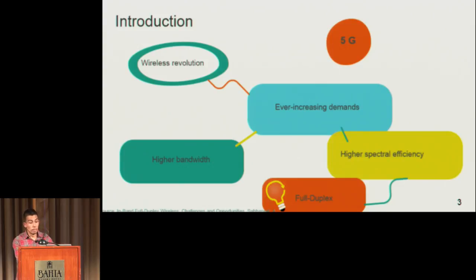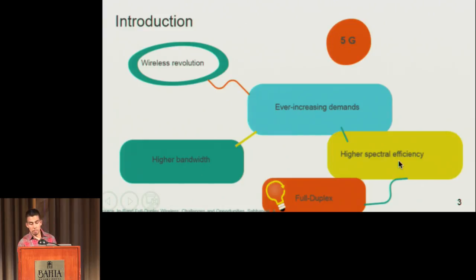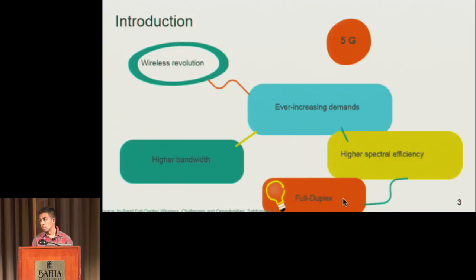As introduction, the wireless revolution that we are living right now demands more and more from our limited spectrum. So if we want to solve this problem, we have two options. On the one side, we can try to increase the bandwidth — it's the easy but expensive way. On the other hand, we can apply techniques to make better use of the spectrum. That is what full duplex proposes: make better use of the spectrum.